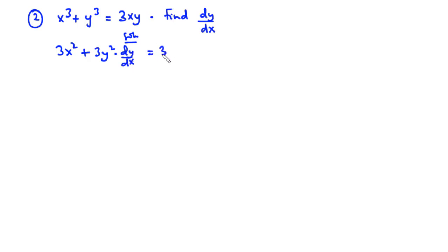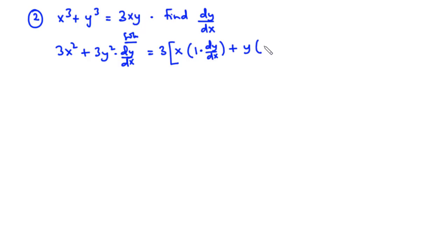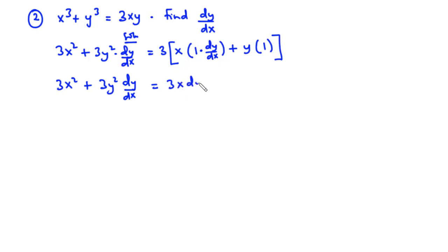On the right hand side we factor out 3 and treat x and y as a product, so we use the product rule. We maintain x and differentiate y, which gives 1, and because it is a y term we multiply by dy/dx. Plus we maintain y and differentiate x, which gives 1. Multiplying 3 across, this becomes 3x dy/dx plus 3y.